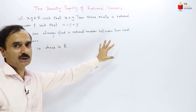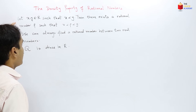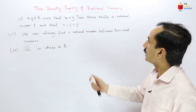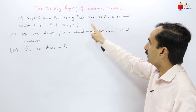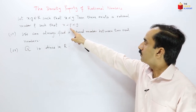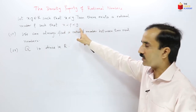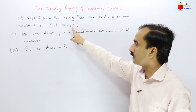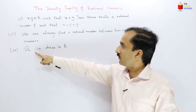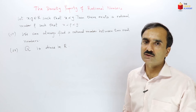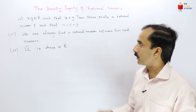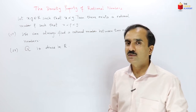The density property of rational numbers can be defined in any one of three equivalent ways: if we have two real numbers x and y with x less than y, then there exists a rational number p such that x is less than p is less than y; or we can always find a rational number between any two real numbers; or the set of rational numbers Q is dense in the set of real numbers.